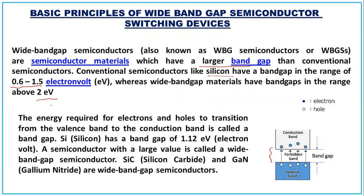The main difference is the band gap can go up to two electron volts, whereas normal silicon semiconductor is 0.6 to 1.5 electron volts. The energy band gap is the gap between the valence band and the conduction band. I have given you notes as well, because most of the phenomena in this subject are theoretical, so you can write down the notes and listen. The energy required for electrons and holes to transition from the valence band to the conduction band is called the band gap. Silicon has a band gap of 1.12 electron volt.